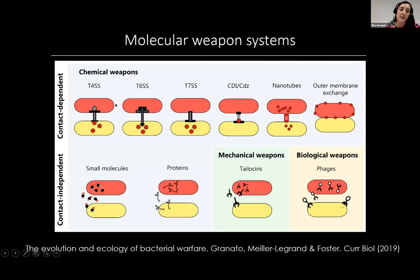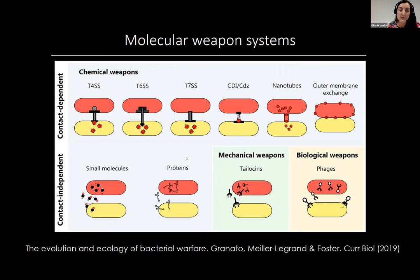I'm broadly categorizing these weapon systems by whether they're contact dependent or contact independent. The contact dependent ones in the top row really rely on the attacker cell sitting right next to the target cell, so this only allows really short range interactions. The contact independent systems in the bottom row rely on diffusible toxic molecules, allowing interactions between cells that are actually really far away. The system I'm going to talk about today lives in this category — diffusible protein toxins.